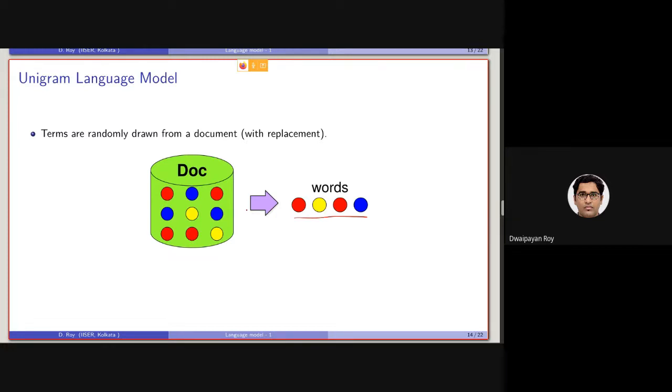Following a unigram language model, it will be basically independent of each other. So it will be basically the probability of drawing the individual words one after the other. It will be something like this.